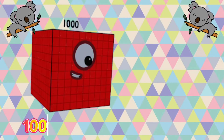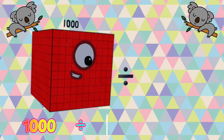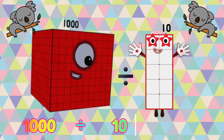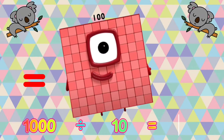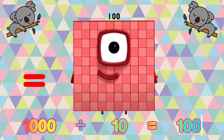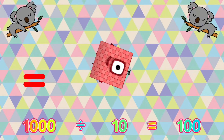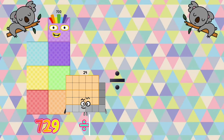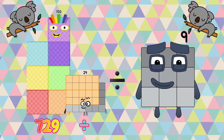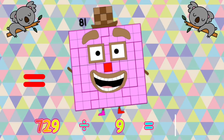1000 divided by 10 is equals to 100. 729 divided by 9 is equals to 81.